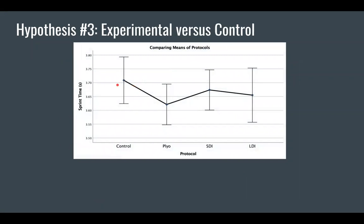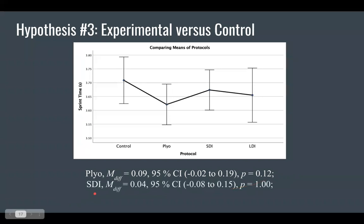And third, our experimental versus our control. What we can see here through this estimated means table, with these overlapping error bars, we could assume that all of the protocols were not significantly different. And this is reinforced here. Comparing our control to our plyo, it was about a tenth of a second slower, but insignificantly different. We can see here it versus the short four hundredths of a second and the long five hundredths of a second slower, though statistically insignificant. Therefore, we must reject the third hypothesis that the experimental protocols did not outperform the control.